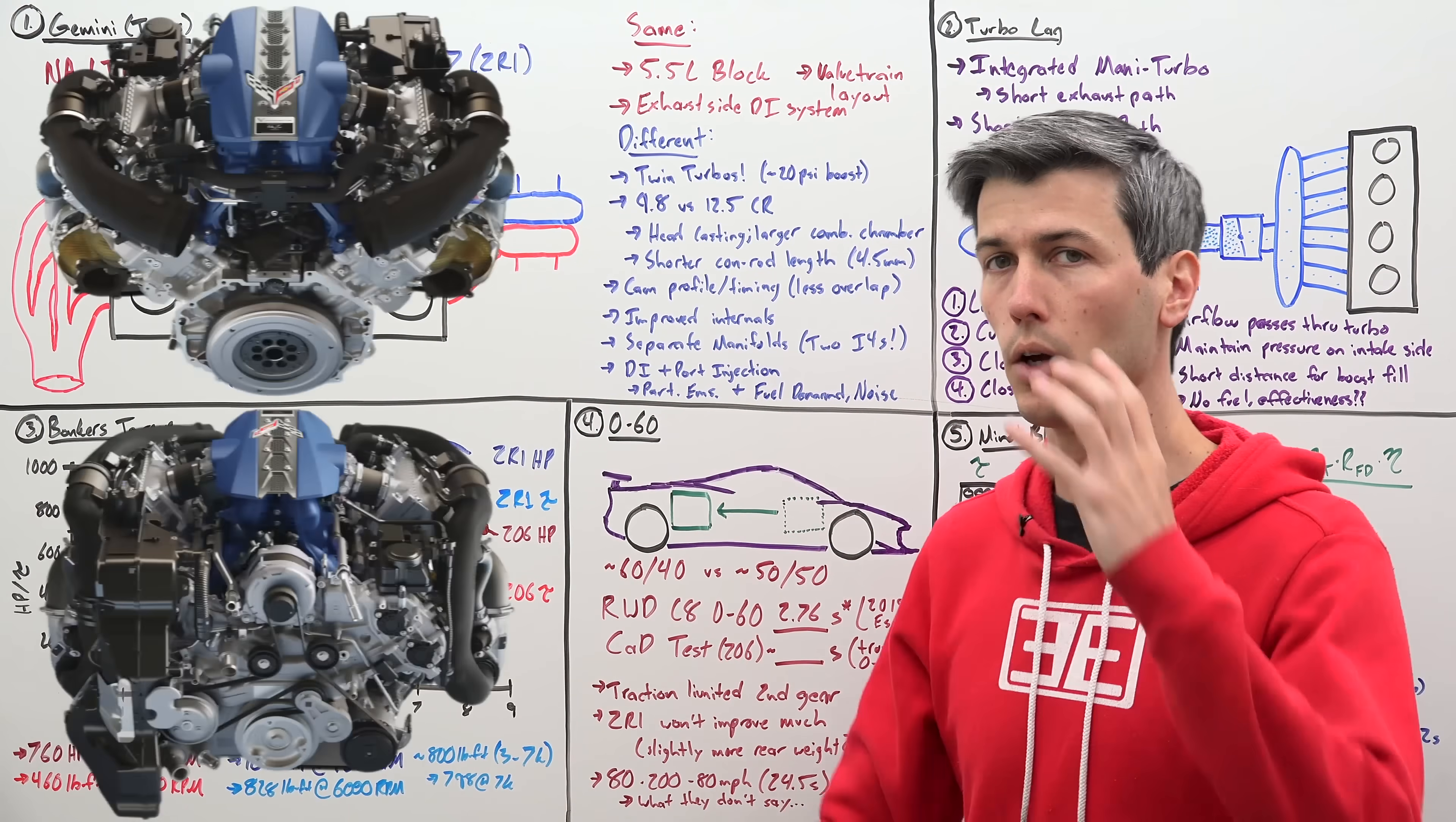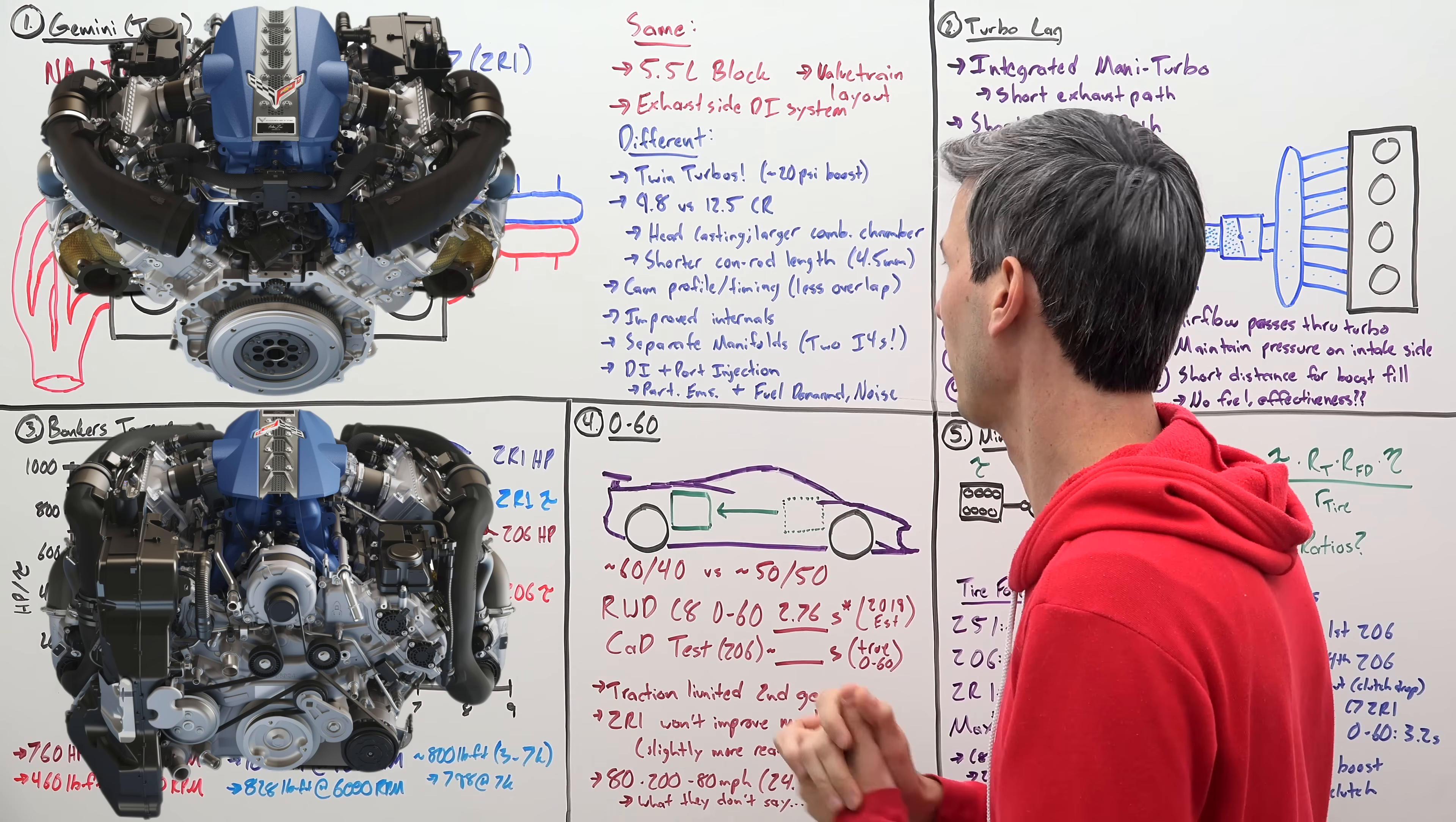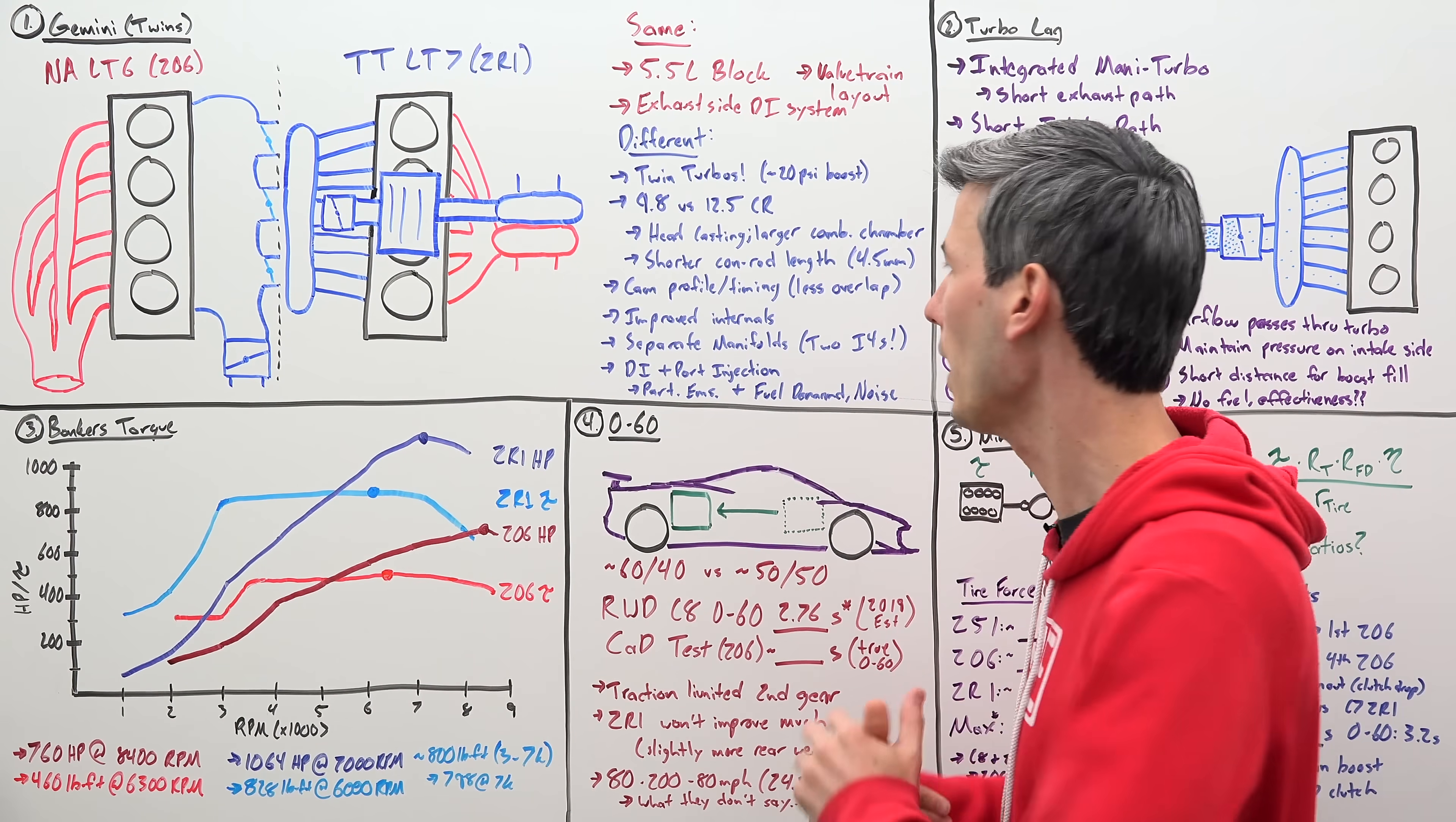How do they do this? Well, they've changed the head casting so it has a slightly larger combustion chamber. They've also shortened the connecting rod length, so pulling that piston down a little bit by 4.5 millimeters, enabling a larger combustion chamber and reducing that compression ratio. Of course, because this is a boosted engine, you don't want a lot of valve overlap like you might have with a naturally aspirated engine, so they have changed the cam profile and timing so that you have less valve overlap.